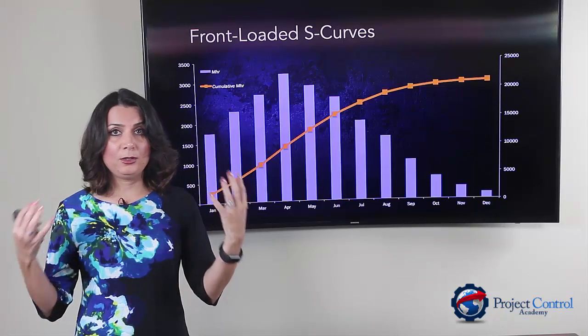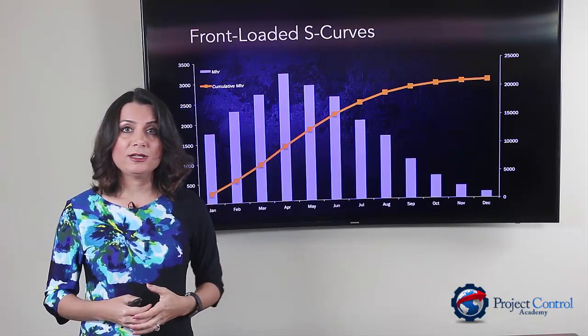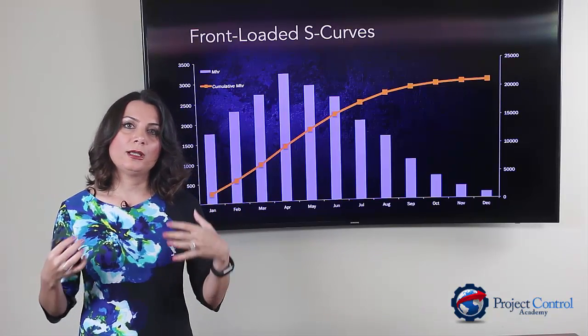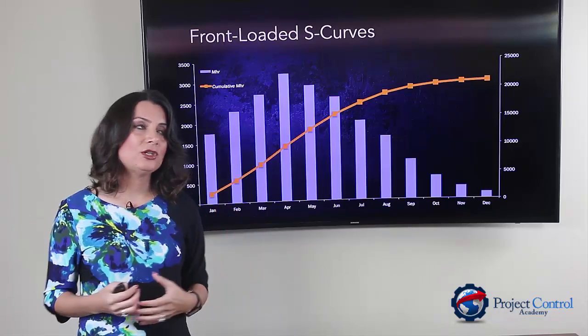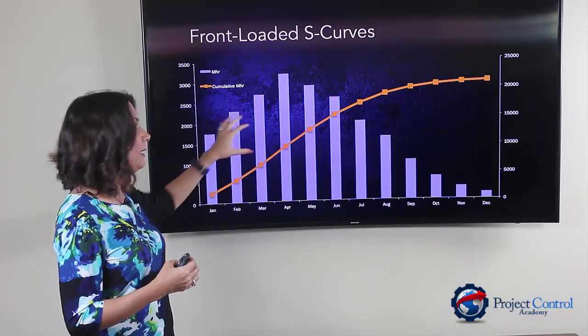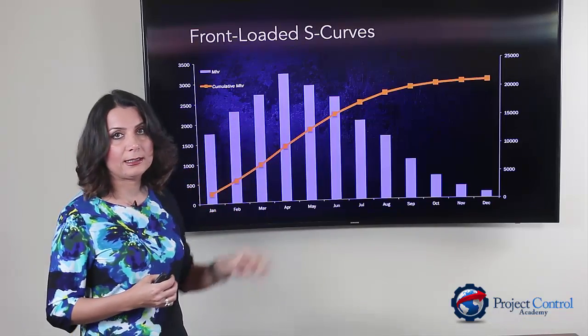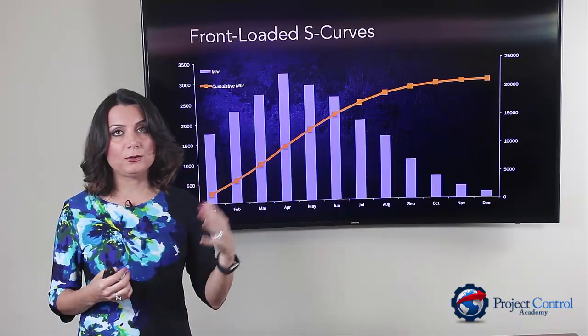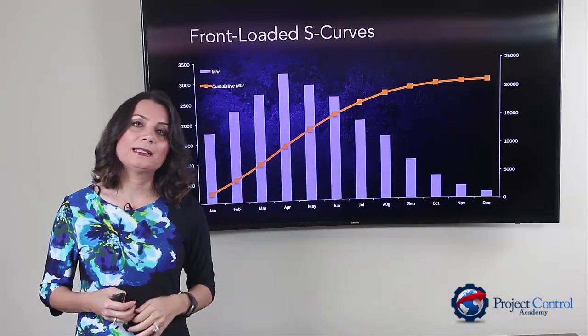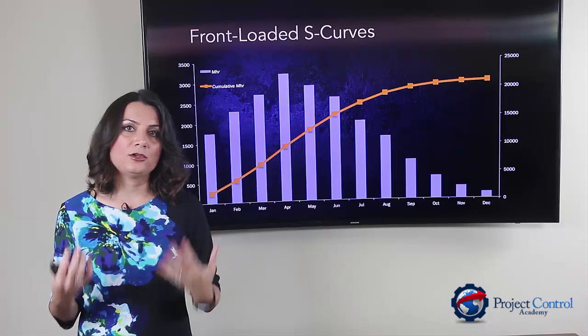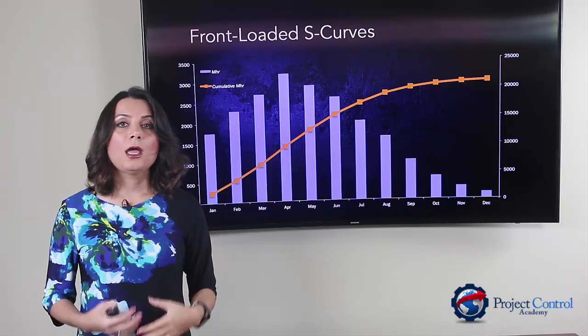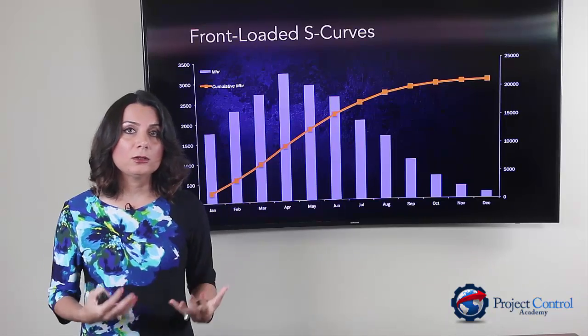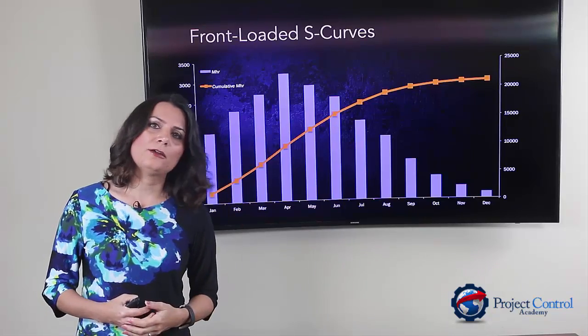You will put a lot of resources early on to repair that damage — that would be another example of a front-loaded S-curve.